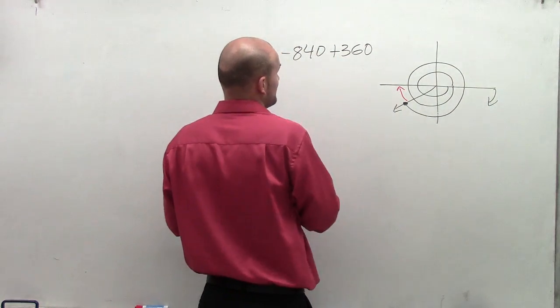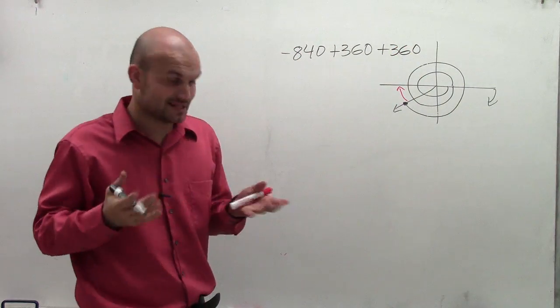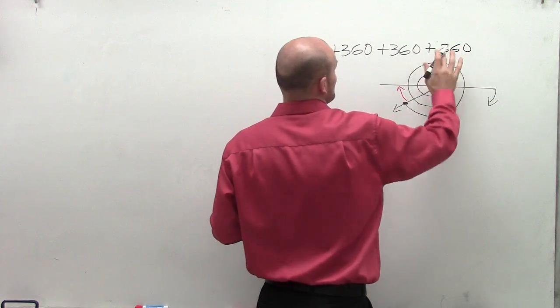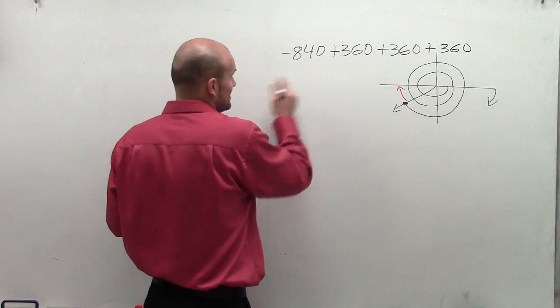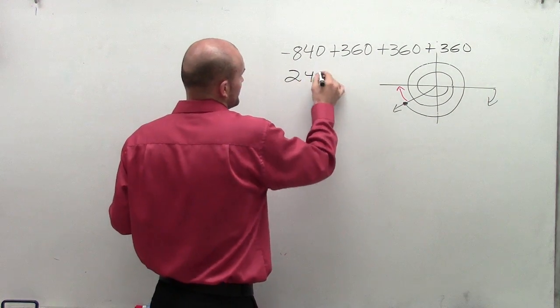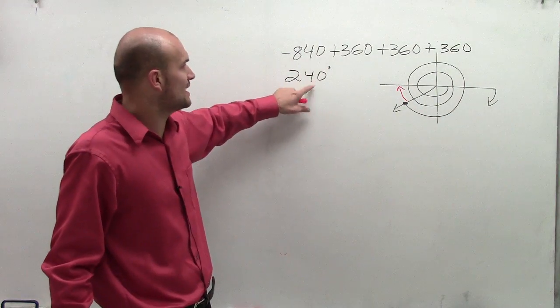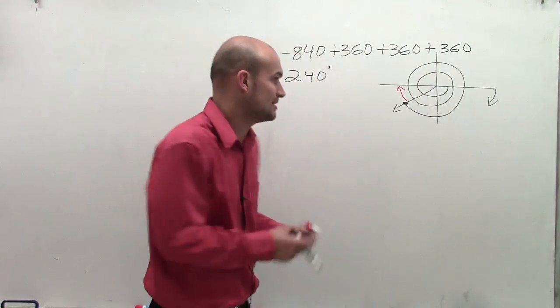So therefore I add 360, still going to be a negative angle. I add 360 again, I still have a negative angle. And let's add 360 one more time. And therefore I'm finally going to have a positive angle, which is going to be 240 degrees. So what that means is 240 degrees is the exact same initial and terminal side as negative 840 degrees. And let's just double check that.